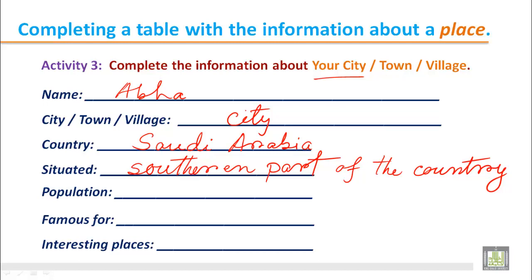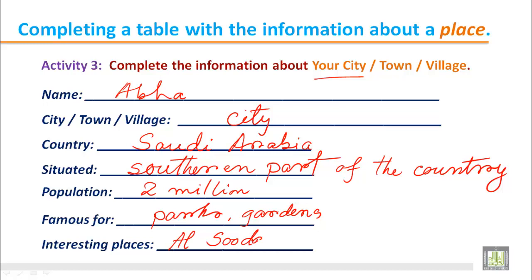Regarding population, we cannot say exactly, but we can say it has a population of two million. Famous for: Why is Abha famous? There are many parks and gardens, and it has very nice weather and different places for visiting. So we write 'parks, gardens.' For interesting places, tourists usually visit places like Al Sudha, Al Habala, or other interesting places you can add here.